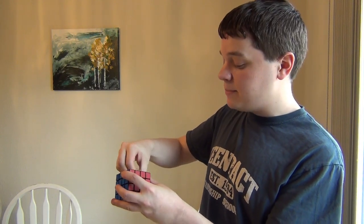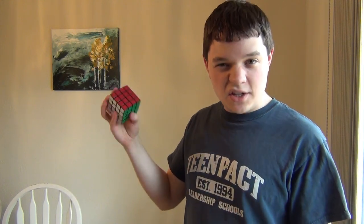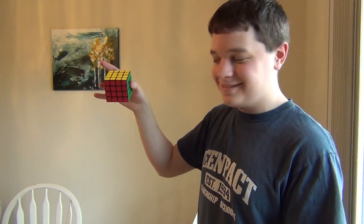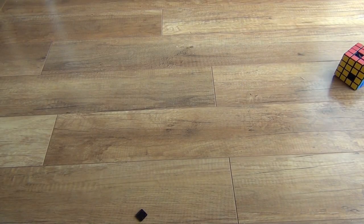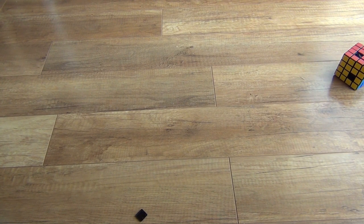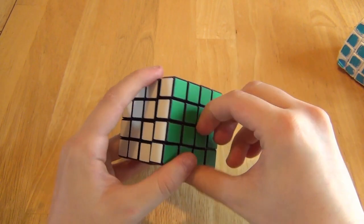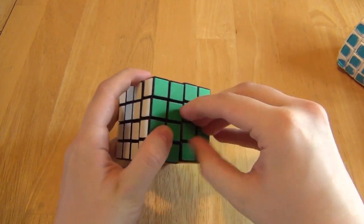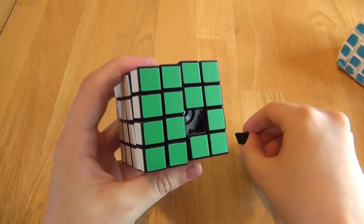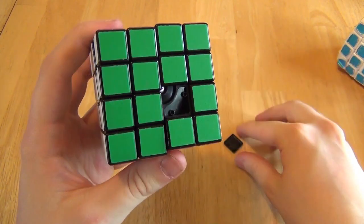Now in the DIY version, at least, the center caps can easily be popped off. So let's see if the center caps can hold up to a nice, good, firm drop on the floor. So yes, you will definitely have to be gluing down these caps. And when you go to glue those caps down, I would highly recommend you take the cube apart first, because you're just going to get glue all over the other pieces.